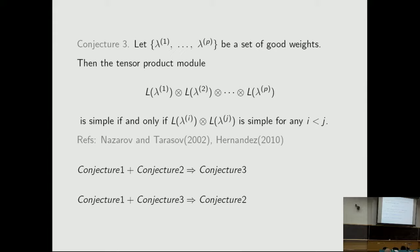Conjecture 3: let L be a set of good weights, then the tensor product module is simple if and only if for any i less than j, the tensor product of L(lambda_i) tensor L(lambda_j) is simple. This was proved by Nazarov and Tarasov in 2002 for finite-dimensional modules, and in 2010 by Hernandez for quantum affine modules. Conjecture 1 and Conjecture 2 together imply Conjecture 3, and Conjecture 1 and Conjecture 3 together imply Conjecture 2.